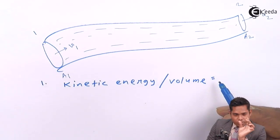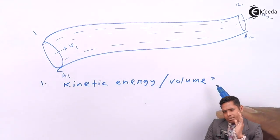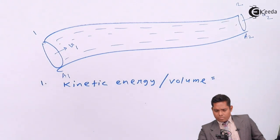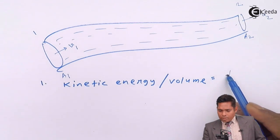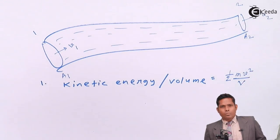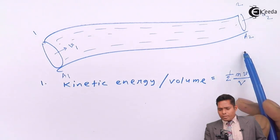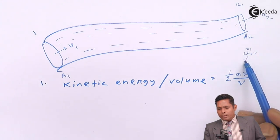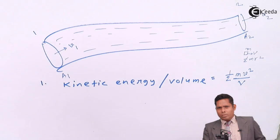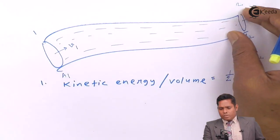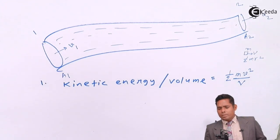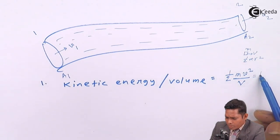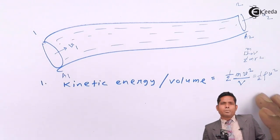If we consider a small portion of liquid of mass m, then its kinetic energy is half mv². But we define the energy per unit volume — that is, for unit volume, how much is the kinetic energy? That is half mv² divided by volume. Kinetic energy is half mv² and volume is V. Because liquid is not a single solid object; continuous water is flowing, so we consider mass per volume, which is density. Therefore, kinetic energy per unit volume is half ρv². This is how kinetic energy per volume is defined in case of liquid flow.